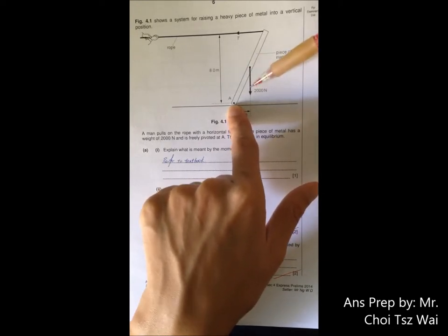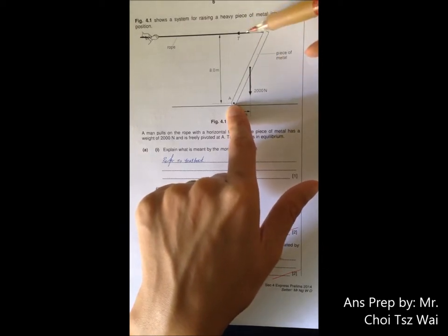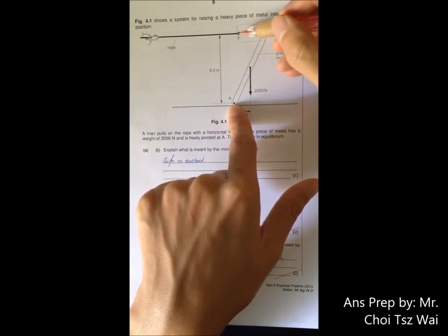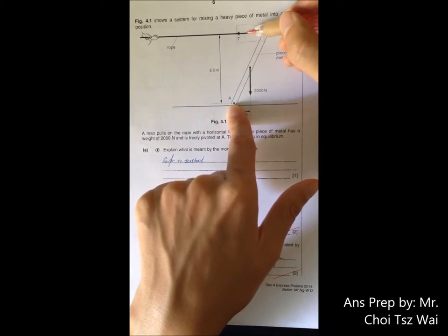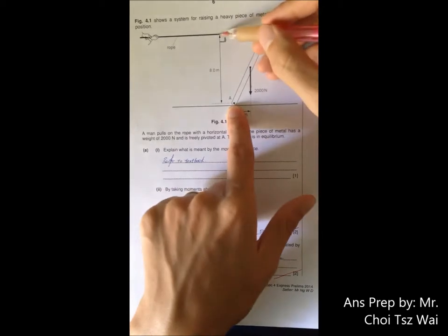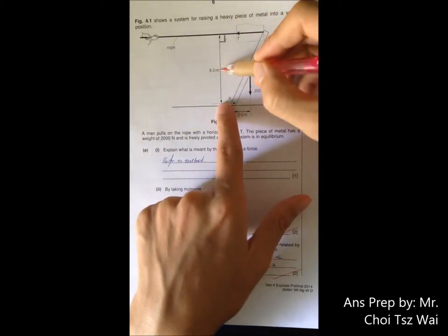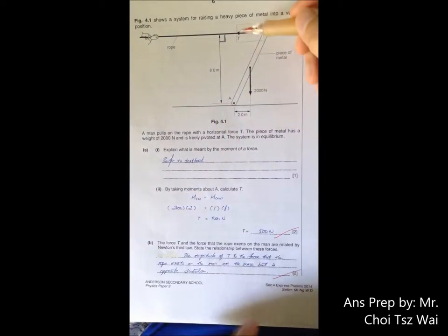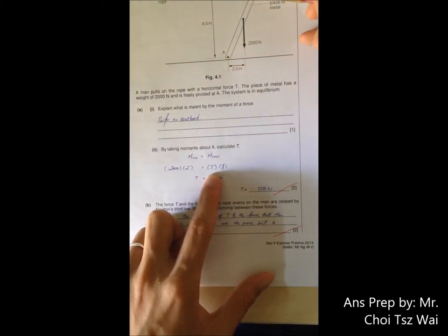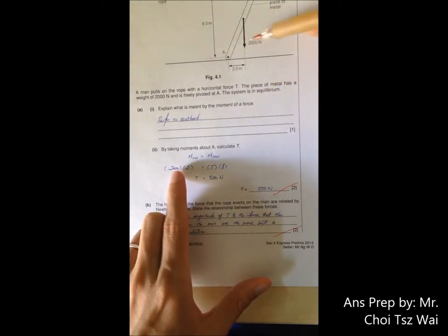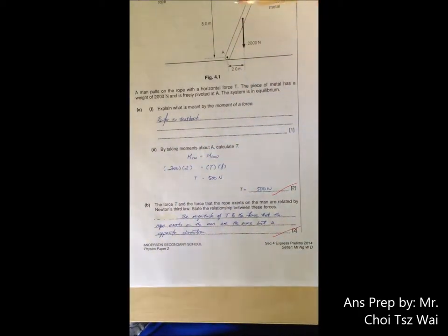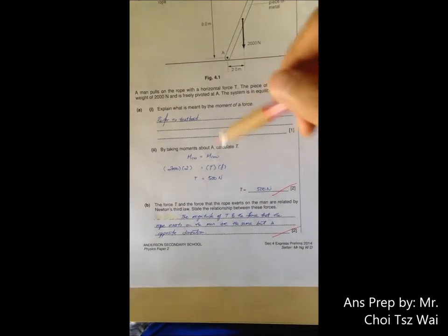You need to be aware that when you are calculating the moment here, you have to take the perpendicular distance from the line of action of the force to the pivot. This is the force, right? This arrow is the force. The line of action of the force is just an extension of this force vector. And you can see down here, there's a perpendicular distance from the line of action to the pivot. That is what is the meaning of perpendicular distance from line of action to the pivot. Down here, the counterclockwise force from the tension is just T times 8. Clockwise moment caused by the 2,000 newton is just your 2,000 newton multiplied by 2. In fact, it didn't give you any other parameter to confuse you. It is quite straightforward, 500.